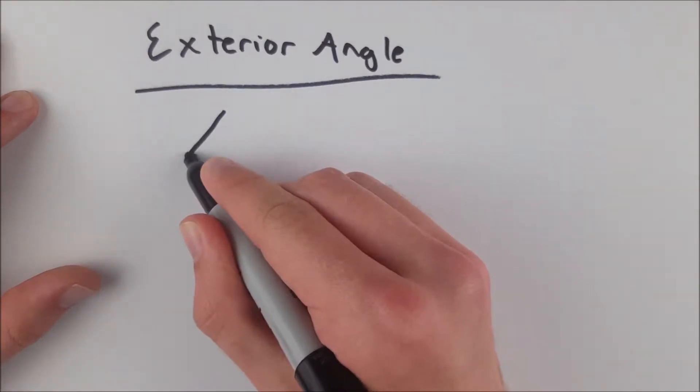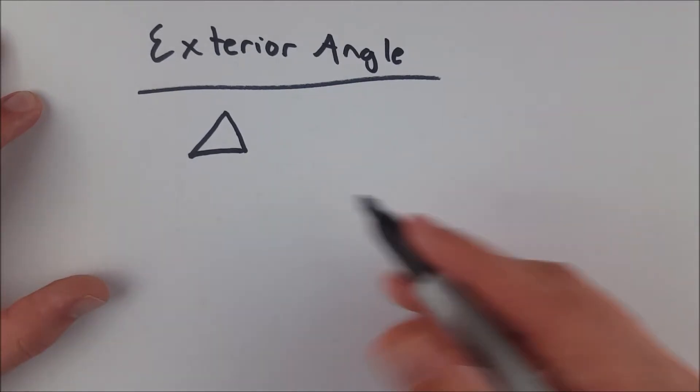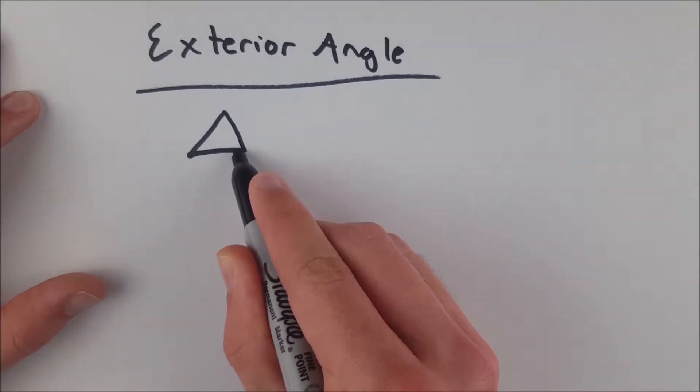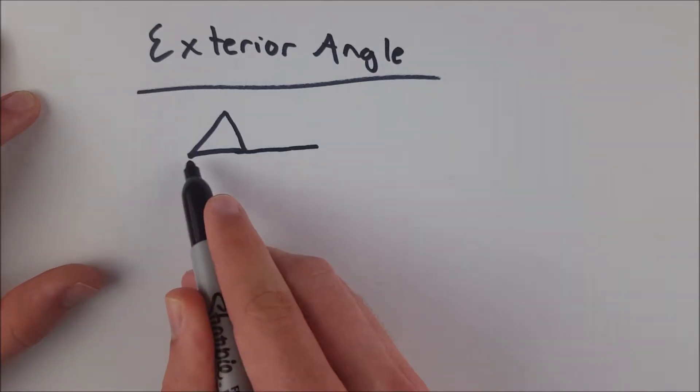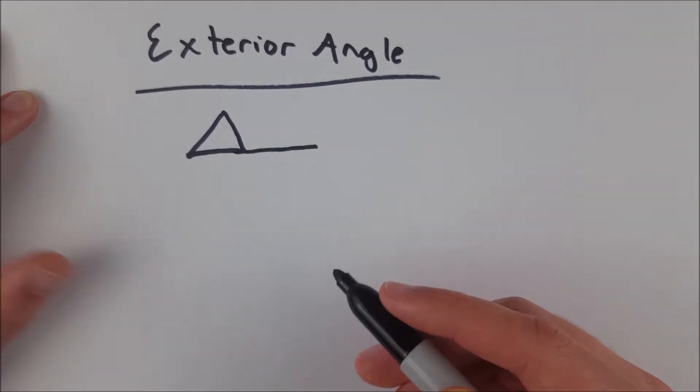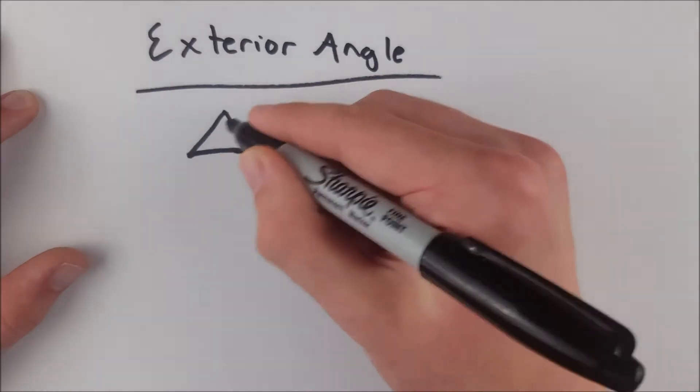We'll look at it first on a triangle, like this. An exterior angle is the angle formed between an extended side and the adjacent side. So we extend one side, and then an exterior angle is created between this line we extended and the adjacent side.